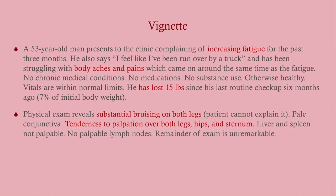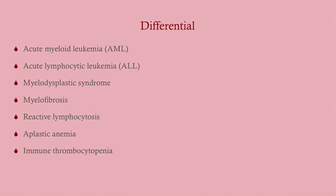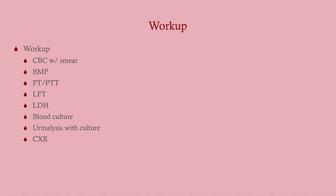What stands out: fatigue and weight loss suggests cancer, and bruising suggests possible anemia and thrombocytopenia — i.e., pancytopenia — which should make you think of leukemia. Our differential includes hematologic malignancies and pre-malignancies: AML, ALL, myelodysplastic syndrome, myelofibrosis, reactive lymphocytosis, aplastic anemia, and immune thrombocytopenia.